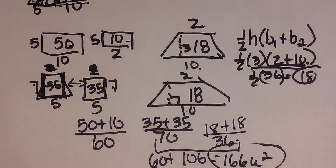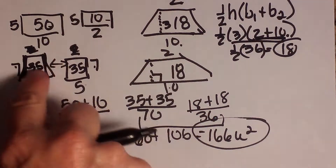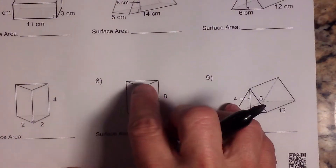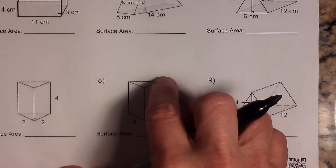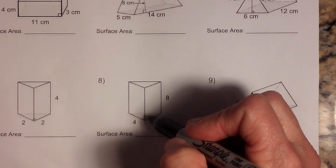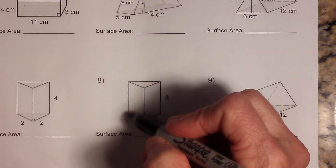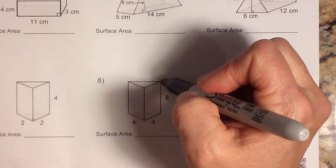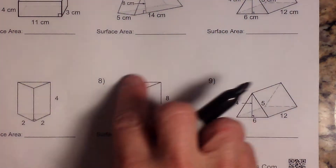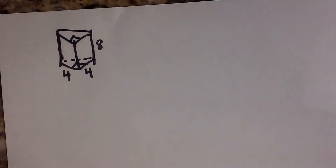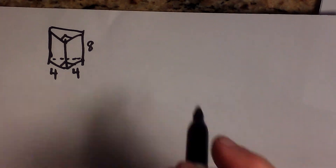The last shape we're going to look at is a prism with a triangular base. Let's count how many faces it has: a top and a bottom — that's two; a side on the left — three; a side on the right — four; and a rectangle on the back — five. So this one only has five faces, which is a little different. I've drawn it on a separate sheet to give us room to draw our nets.